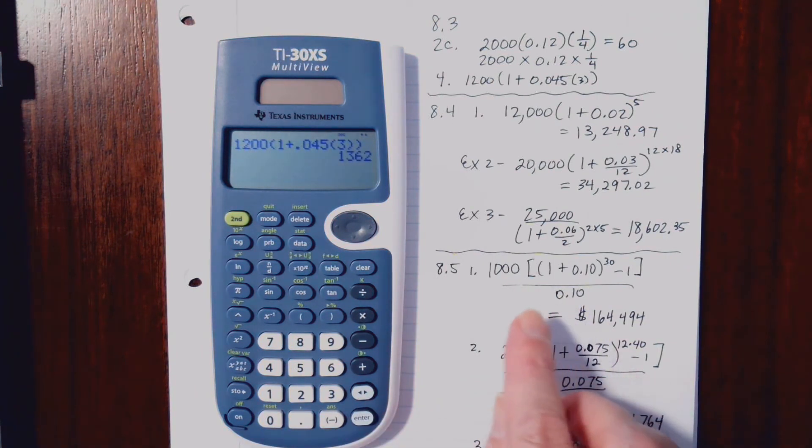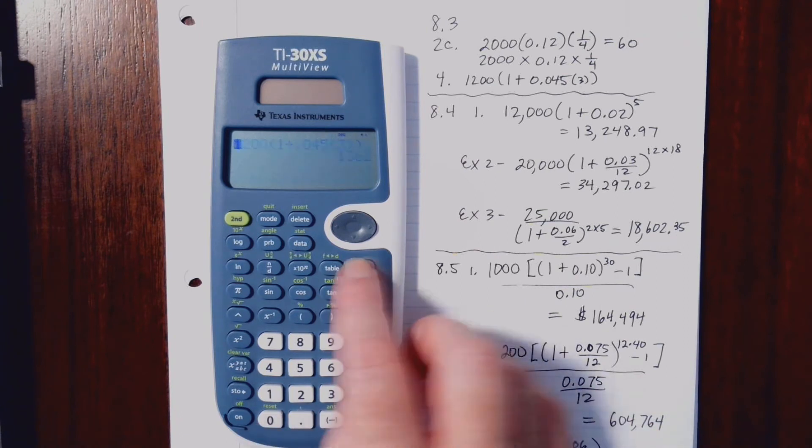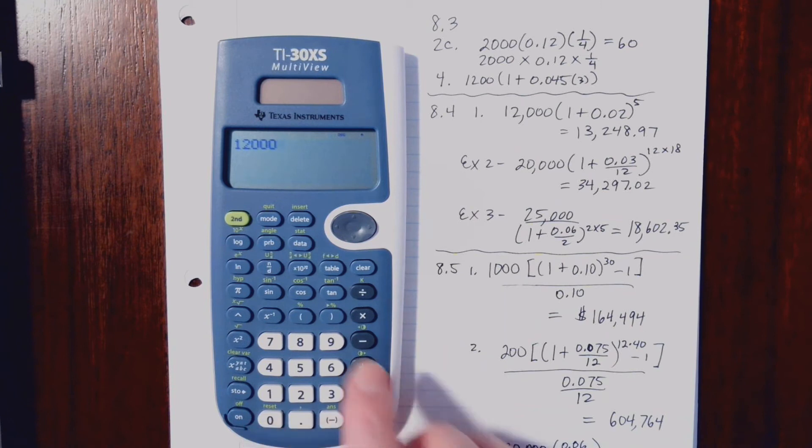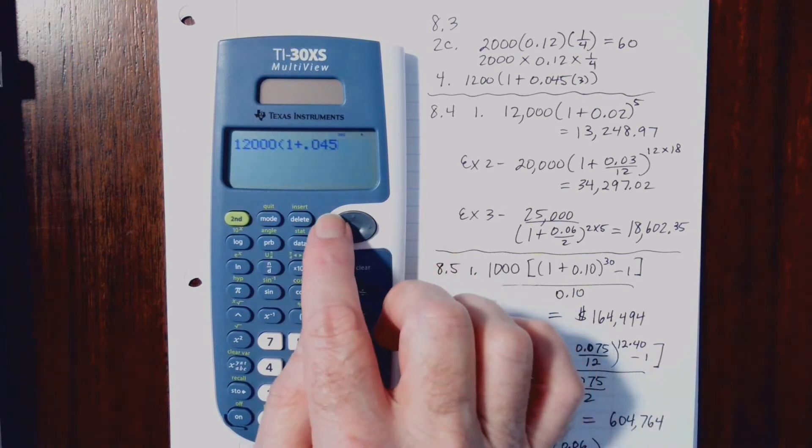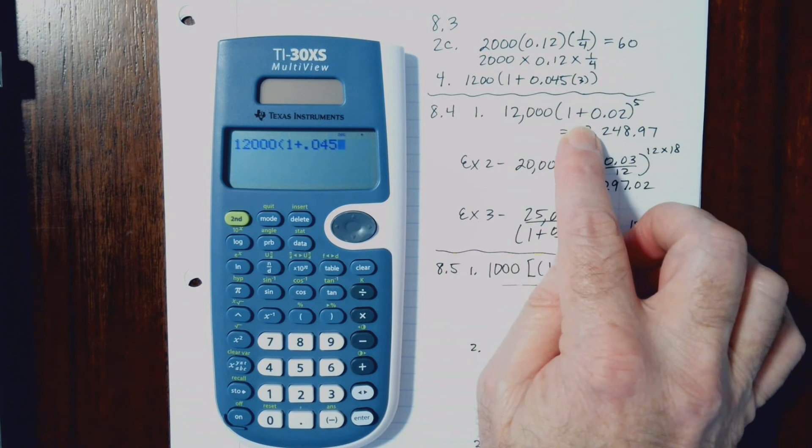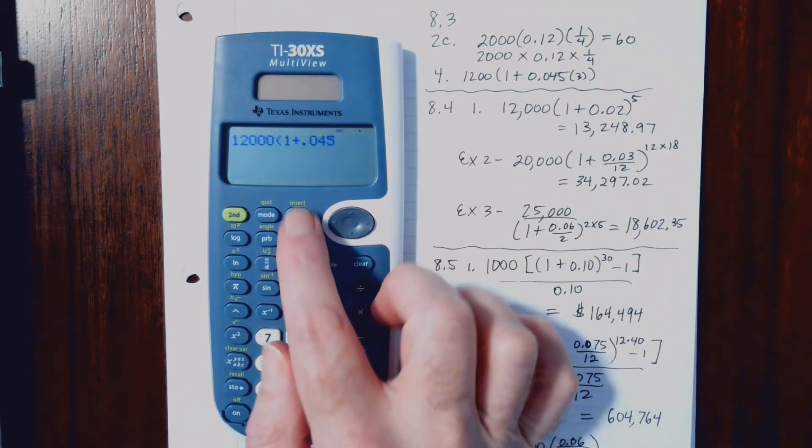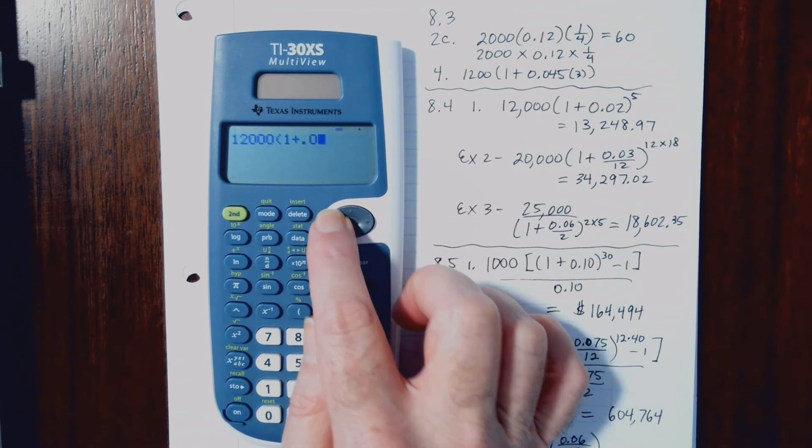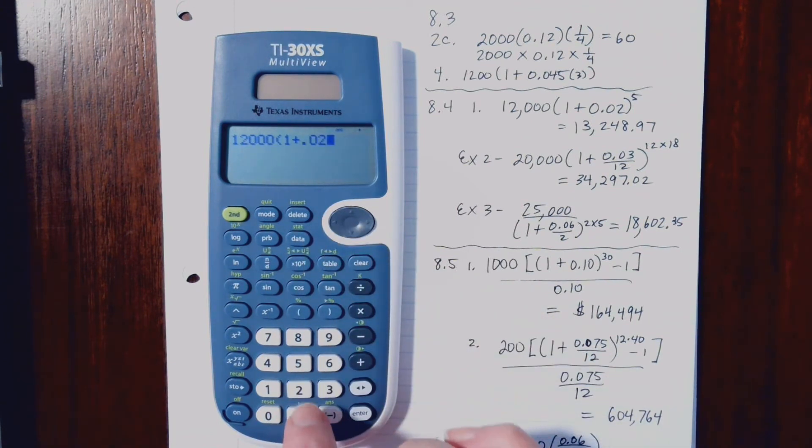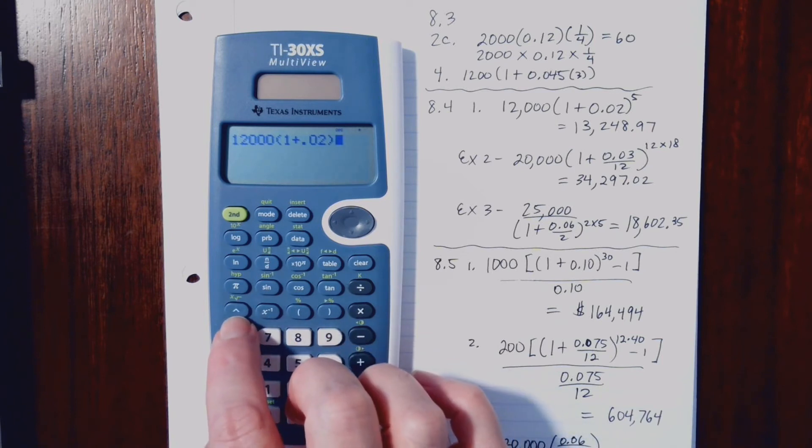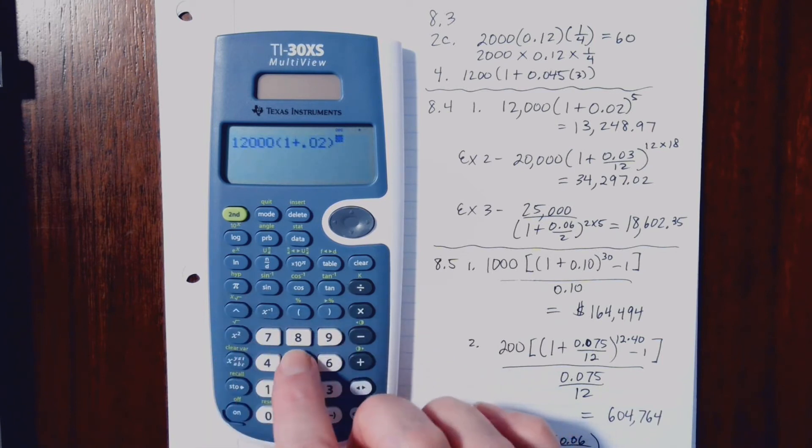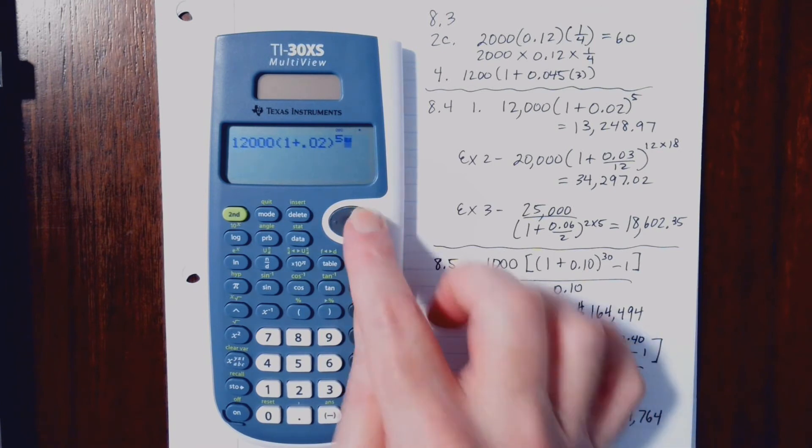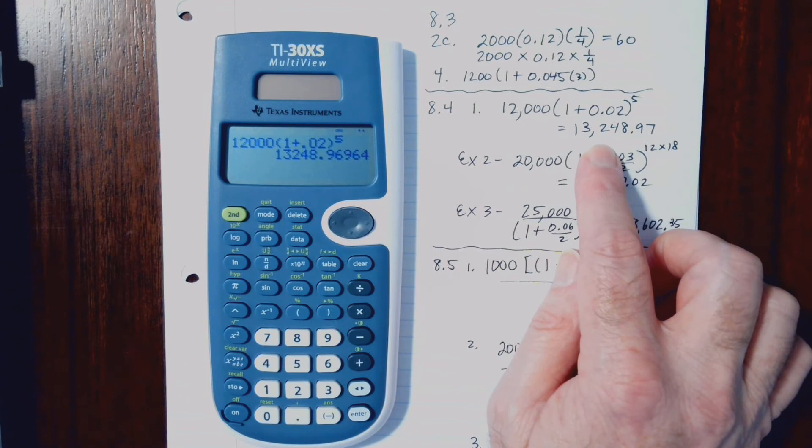All right, let's move on to the problems from Section 8.4. So here we have 12,000, parentheses, 1, plus .045. Oops, I messed that up. So this is kind of nice. I can show you how, if you make a mistake, you don't have to start all over. It's actually 1, plus .02, so I'm going to hit Delete when I go back. And actually, I can just type over this 4 here. And then parentheses is my exponent button. We call that the caret symbol to the fifth power. And when you hit Enter, looks like we're good there.